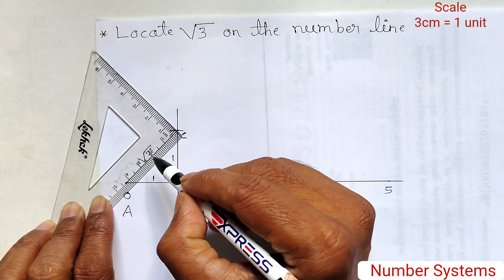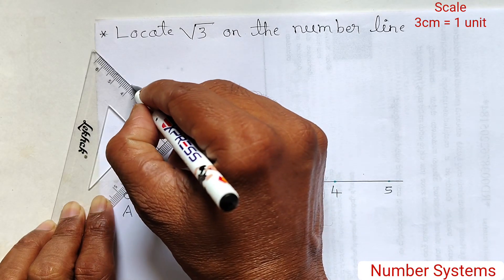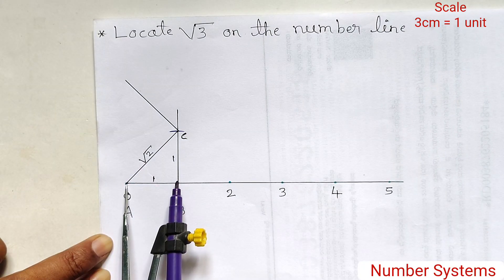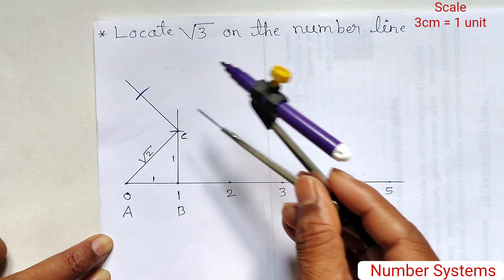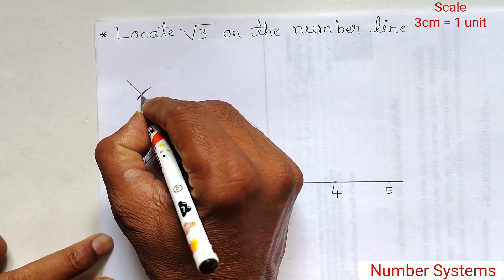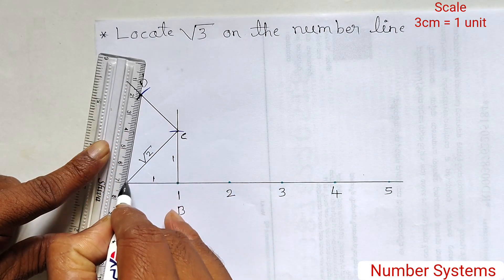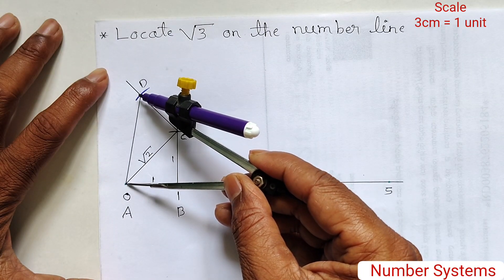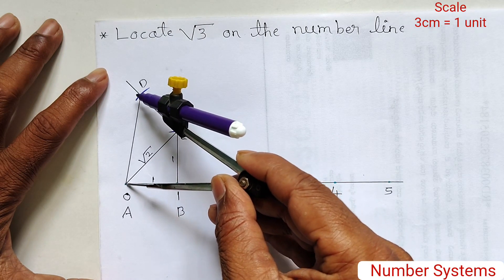Next, draw a perpendicular line to AC from point C using a set square. Take the compass equal to 1 unit and mark on the perpendicular line from point C — this is point D. Join AD. Then expand the compass from point A to D and draw an arc from point A; it touches the number line.